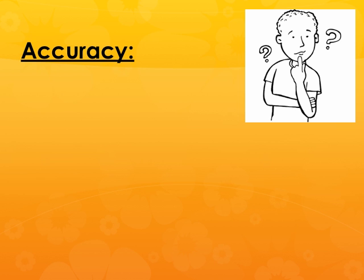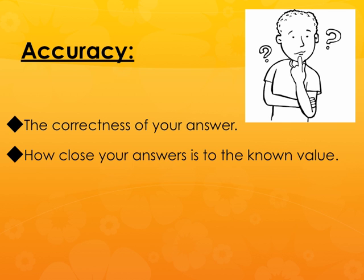Now let's talk about accuracy. Accuracy has to do with the correctness of your answer — how close is your answer to the known value? For example, if I wanted you to find the temperature of boiling water, you could look up that it's 100 degrees Celsius. If you measure it with a thermometer and get 99.8 degrees Celsius, you're pretty accurate with that number.